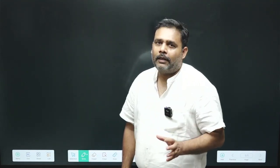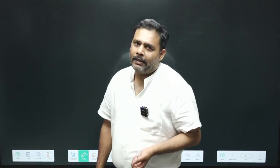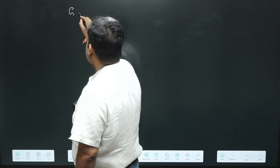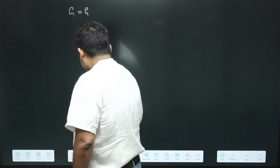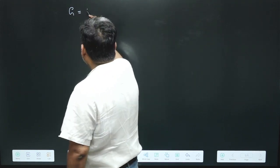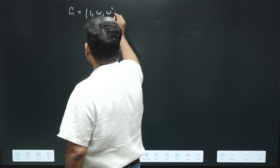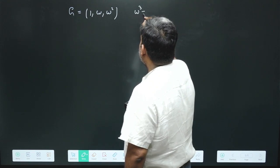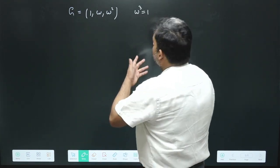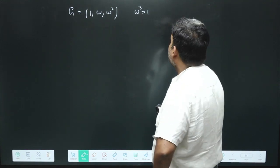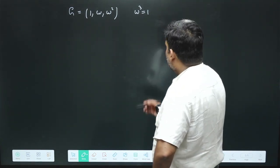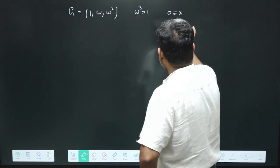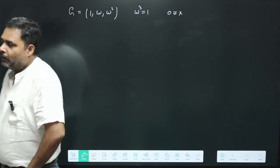The first question, which I gave as homework, is about the cube roots of unity under simple multiplication. We define a group consisting of the elements {1, ω, ω²}, which are the cube roots of unity, with the property that ω³ = 1. The operation here is simple multiplication.